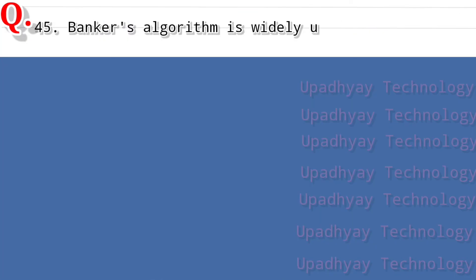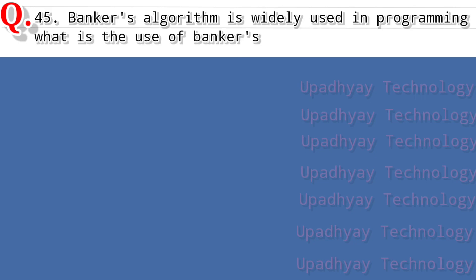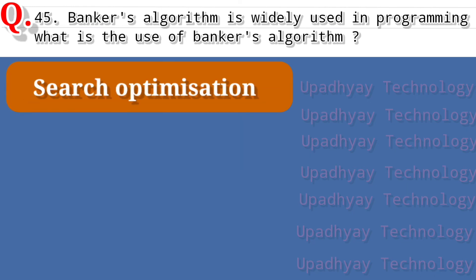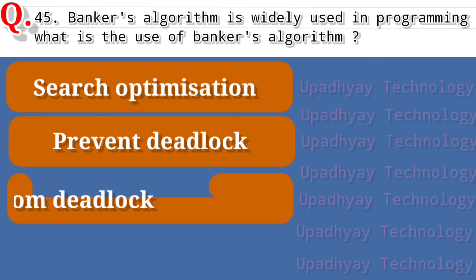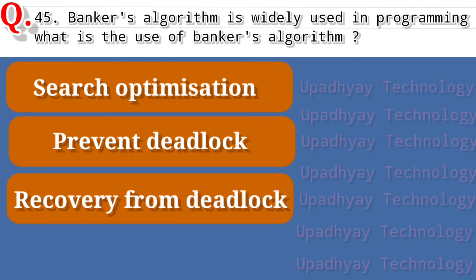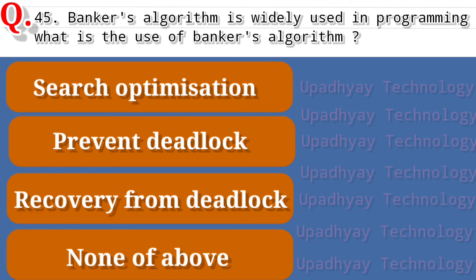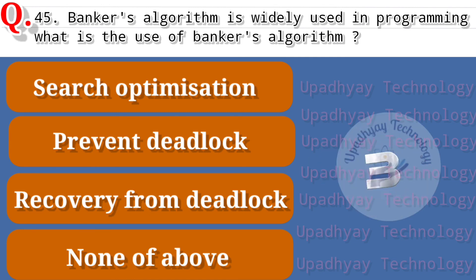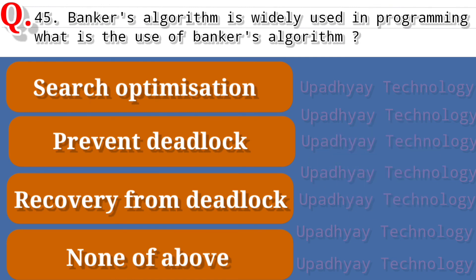Question number 45 of operating system: What is the use of the Banker's algorithm? The options are Search optimization, second option is Prevent deadlock, third option is Recovery from deadlock, and the last option is None of the above. The correct answer is Prevent deadlock.